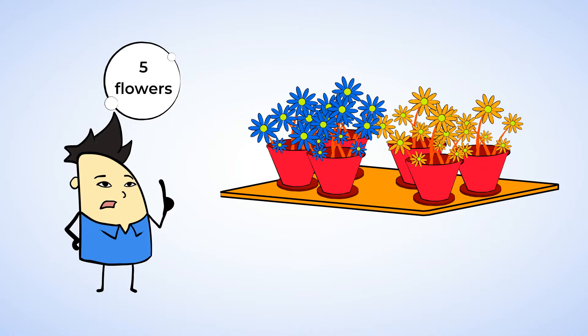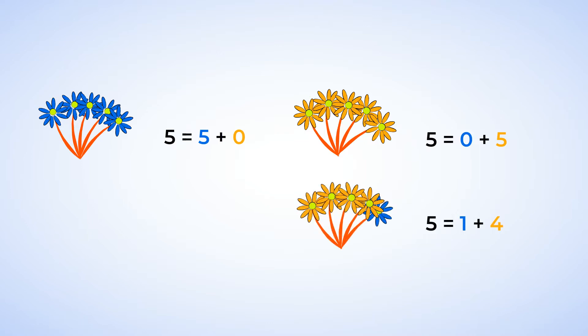Chen could just get all blue flowers, which would mean five blue flowers and zero yellow flowers. That's five equals five plus zero. But what if Chen wanted to get all yellow flowers? That would mean zero blue flowers and five yellow flowers, so five equals zero plus five. One plus four also makes five, meaning Chen gets one blue flower and four yellow flowers. Or we could do the opposite: four blue flowers and one yellow flower, because four plus one also equals five.